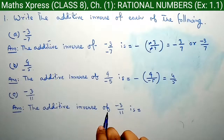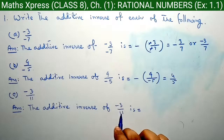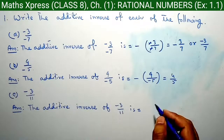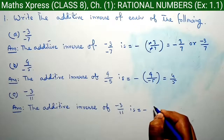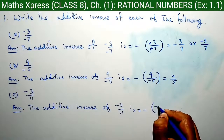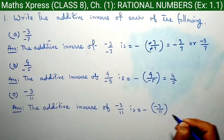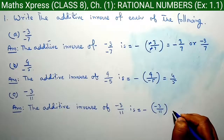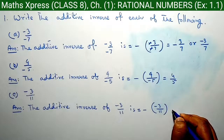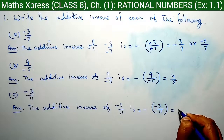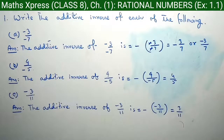Question C: The additive inverse of minus 3 by 11 is equal to minus of minus 3 by 11. Here, this minus and this minus become plus. So, the answer is 3 by 11.